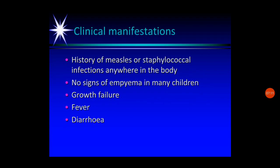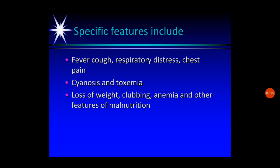For clinical manifestations, history of any infection in the body — measles or staphylococcal infections — may be present. Many children may not show typical signs; growth failure, fever, and diarrhea may be observed. Specific features include fever, cough, respiratory distress, chest pain, cyanosis depending on area of involvement, toxemia, loss of weight, clubbing if long-term, and anemia or other features of malnutrition if untreated for a longer period.